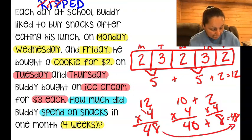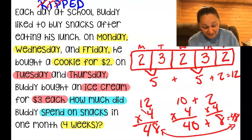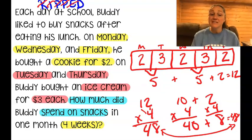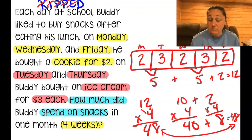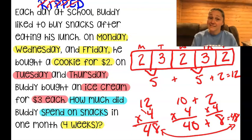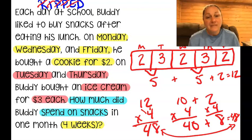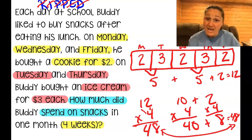Do we check? Yes, we do. We made our plan, set it up, executed it. Does it make sense? $48 a month in snacks? Well, not if it's his mama! That's a lot of snacks. He must go to a very expensive school. Does it make sense mathematically? Yes. Does it make sense for Buddy to spend that much? No way, Jose! This one checks out. Good job.